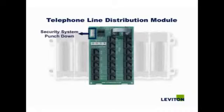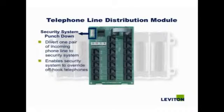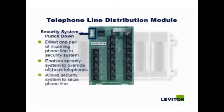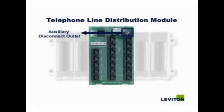This is the security system punch-down, which allows you to divert one pair of incoming phone lines to the security system. It enables the security system to override off-hook telephones and to seize a phone line. This is the security system interface that connects to the security system. This is the auxiliary disconnect outlet.